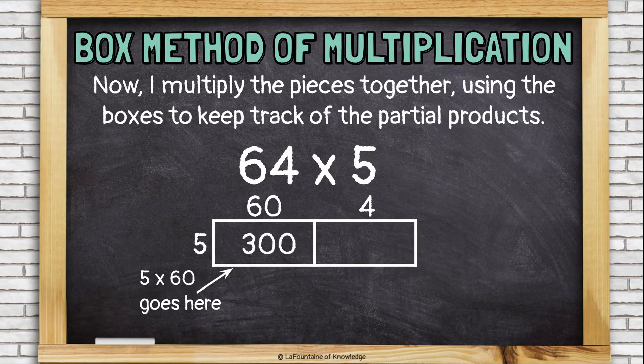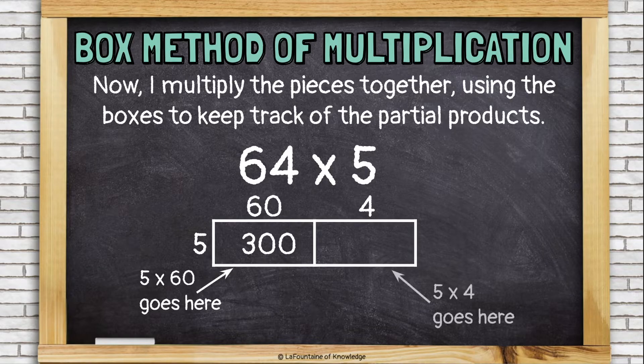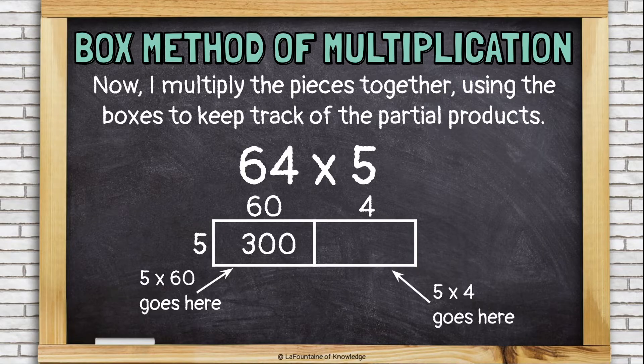Remember, if you know 5 times 6, 30, you know 5 times 60. It's just 30 with an extra zero on the end. Then, in this box, I'm multiplying 5 times 4, which is 20.